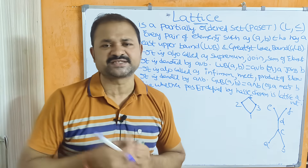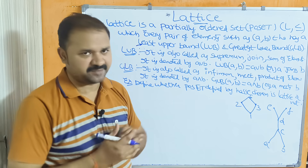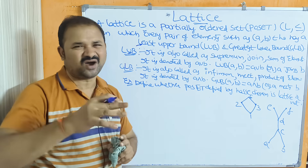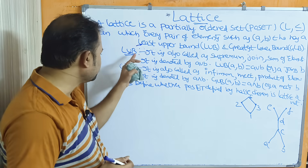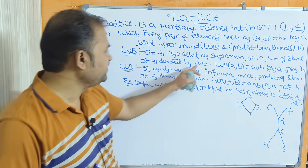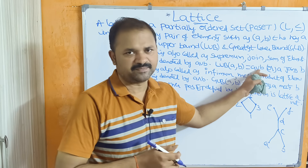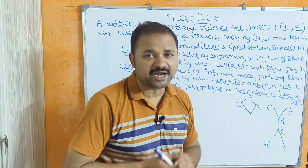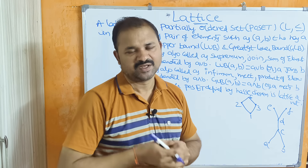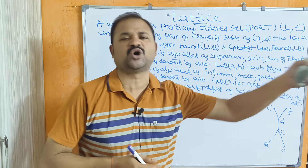The least upper bound can also be called as the join operation, or the sum of elements. It is denoted by the symbol ∨ (V). So LUB(A, B) = A ∨ B, also written as A join B.